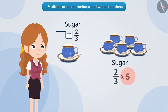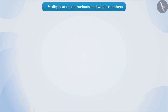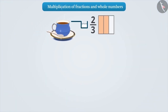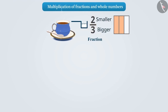Here, we need to multiply a whole number and a fraction. So, let's learn how to do this. Nisha uses 2 thirds teaspoon of sugar for each cup of tea. This is a fraction. In this fraction, the numerator 2 is smaller than the denominator 3. Such a fraction is called a proper fraction.